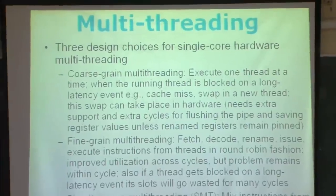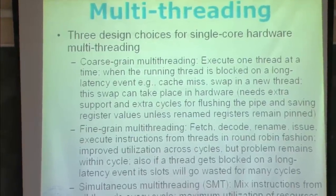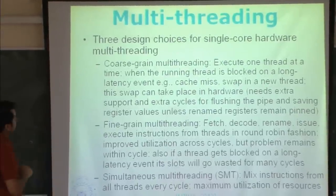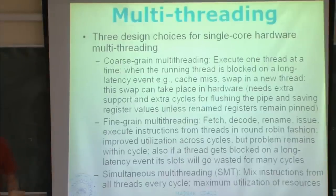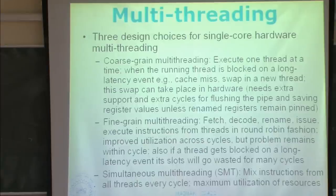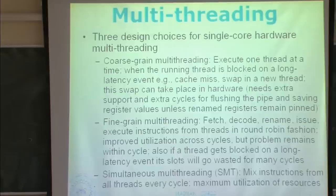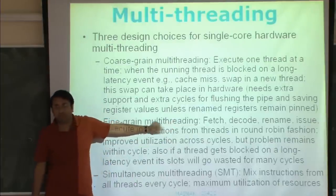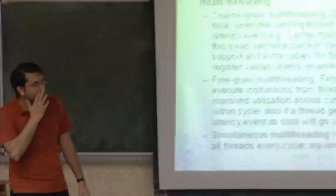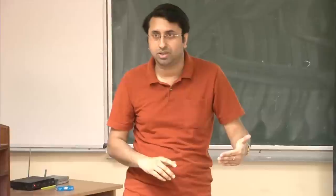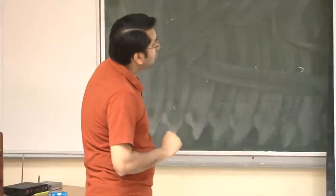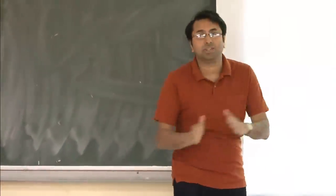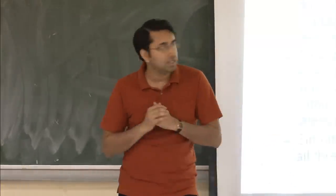There are three design choices for single-core hardware multi-threading — we are talking about just one processor and we want to do hardware multi-threading inside. One is coarse-grained multi-threading, which means you execute one thread at a time. When the running thread is blocked on a long latency event like a cache miss, you swap in a new thread. This swap can take place in hardware, requiring extra cycles for flushing the pipe and saving register values, unless renamed registers remain pinned. If a thread takes a cache miss, you put it to sleep and bring in a new thread to run. You need to change the program counter and make sure the registers used by the old thread are saved properly.